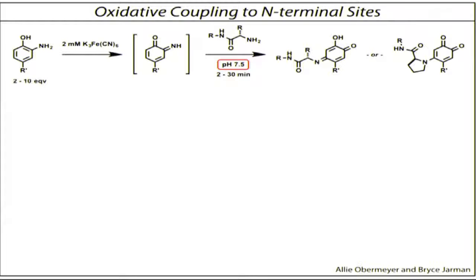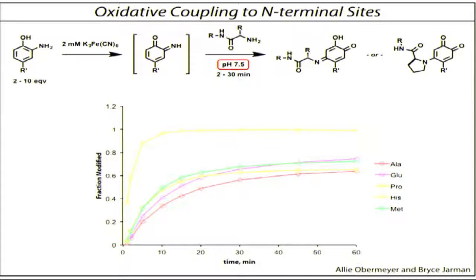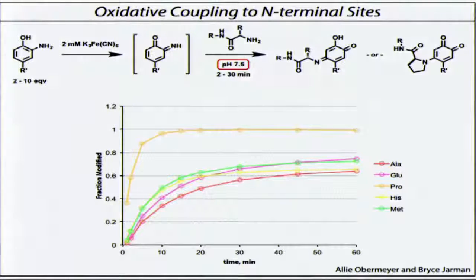So this gives a variety of products. This works particularly, this is a terrible color, but this yellow color here shows this is a very fast reaction reaching completion in about 10 or 15 minutes most of the time when proline is at the N-terminus of the proteins.